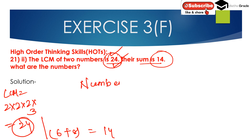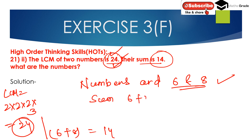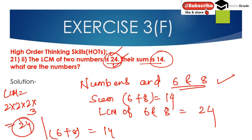The numbers are 6 and 8. Their sum is 6 plus 8 equals 14, and the LCM of 6 and 8 is 24. So the answer to question 21 second bit is: the numbers are 6 and 8.